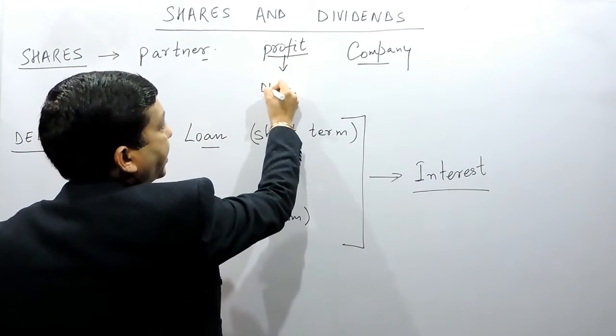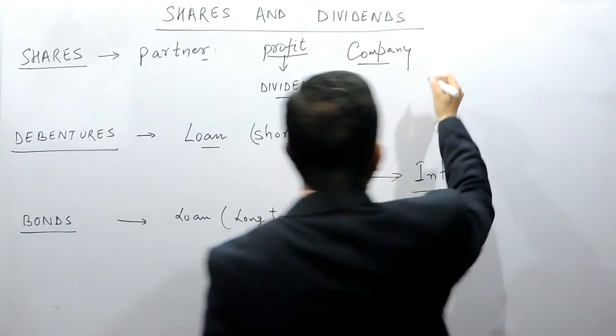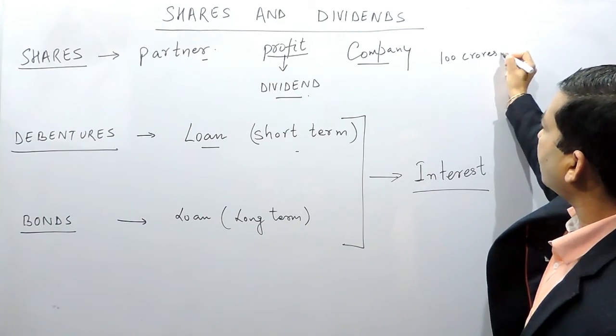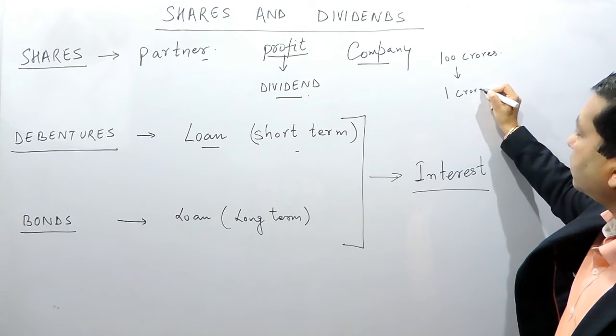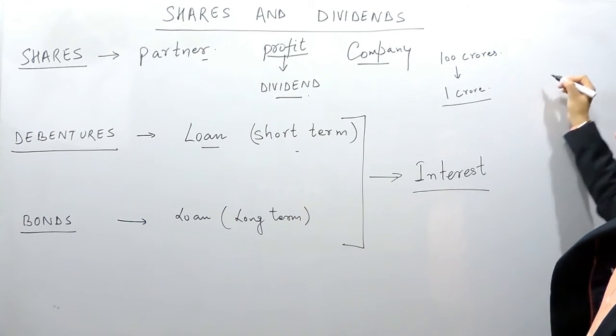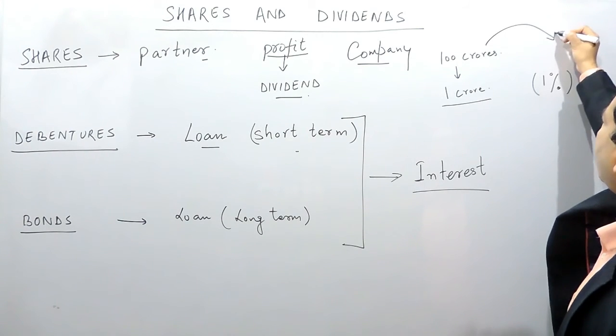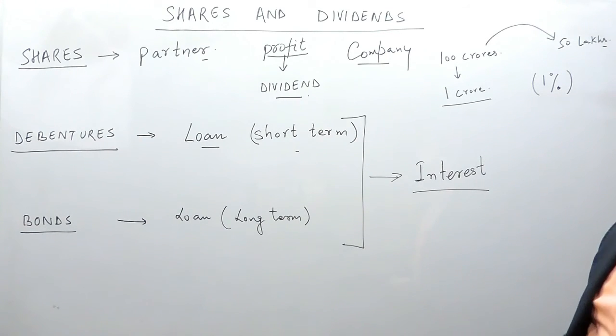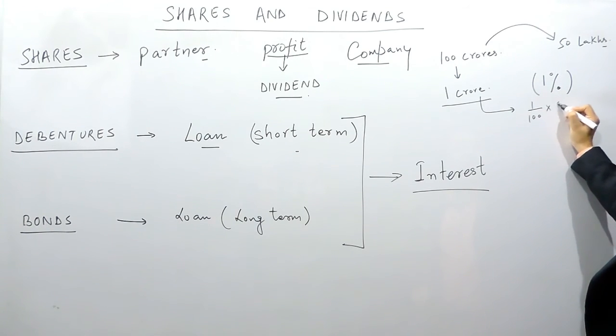As an example, we can say that if a company's value is 100 crores and a person has purchased the share of one crore, that means this person is a one percent partner of the company. If the company earns a profit of 50 lakhs in a span of one year, then at the end of one year this person, because he is a one percent partner, will get one percent of 50 lakhs as dividend.